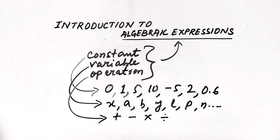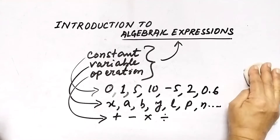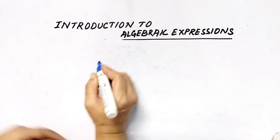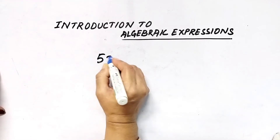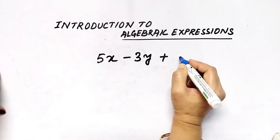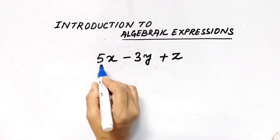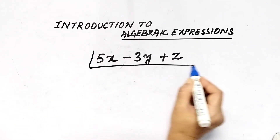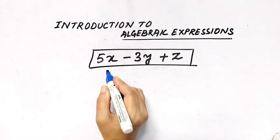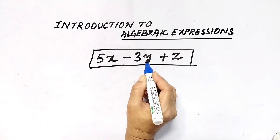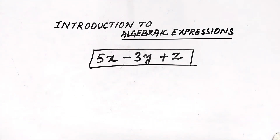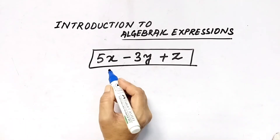Operations — there are four basic operations: addition, subtraction, multiplication, and division. So constants, variables, and operations together form one algebraic expression. For example, let us write 5x minus 3y plus z. This is one algebraic expression. In this expression, 5x is one term, 3y is another term, and z is another term — making it a three-term expression.